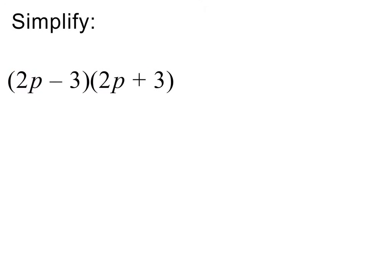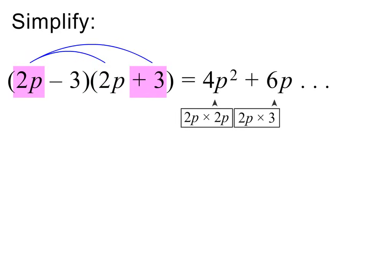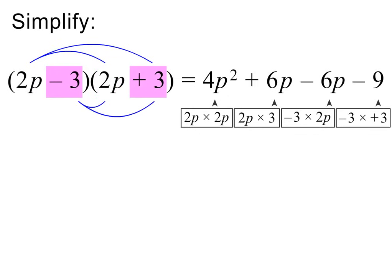In the next example we again have two identical brackets with opposite signs. Using FOIL, we begin with the first terms: 2p times 2p equals 4p squared. Then the outer terms: 2p times plus 3 equals plus 6p. Then the inner terms: minus 3 times 2p equals minus 6p. And then the last terms: minus 3 times plus 3 equals minus 9. The like terms again cancel out, so we are left with only two terms in the answer, which is what we expected. Please pause to check my working.